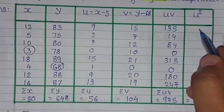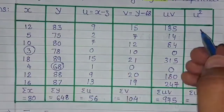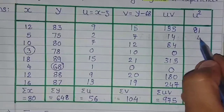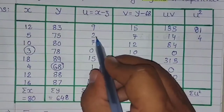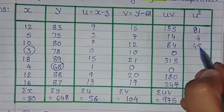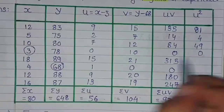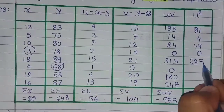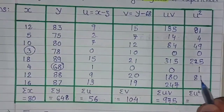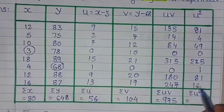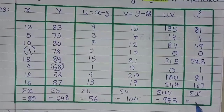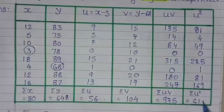Now for u-square: u values are 9, 2, 7, 0, 15, 1, 9, and 13. The square of 9 is 81, square of 2 is 4, square of 7 is 49, square of 0 is 0, square of 15 is 225, square of 1 is 1, square of 9 is 81. The sum of u-square, meaning sigma u-square, will be 610.